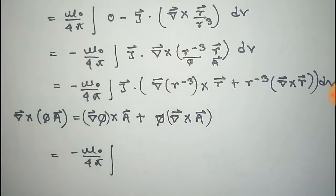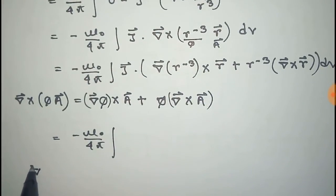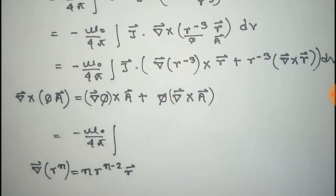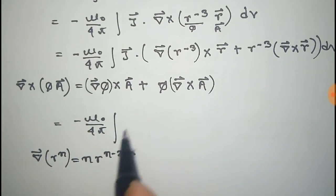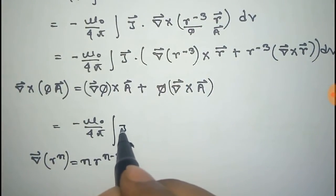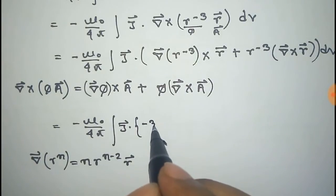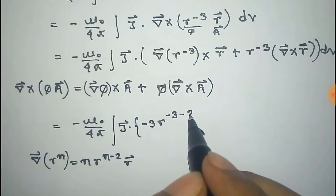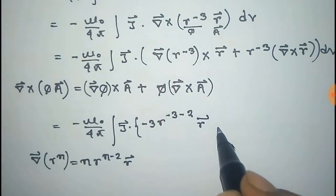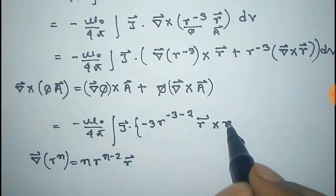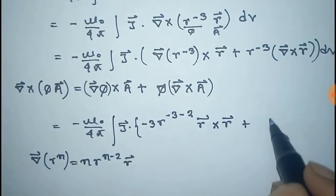To find the gradient of r to the power minus 3, we use the formula: gradient of r to the power n equals n r to the power n minus 2 times r vector. Here n is minus 3, so it becomes minus 3 r to the power minus 5 times r vector, cross r vector, plus r to the power minus 3 into curl of r vector.